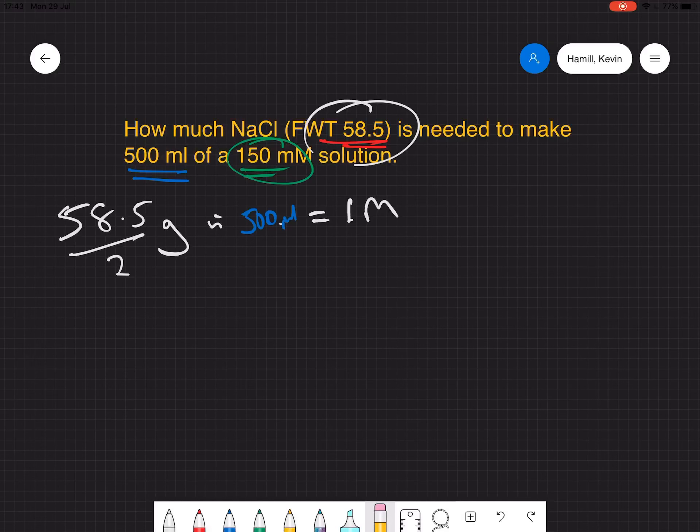So 58.5 multiplied by 0.15 would give me my 150 millimolar in 500 mils.